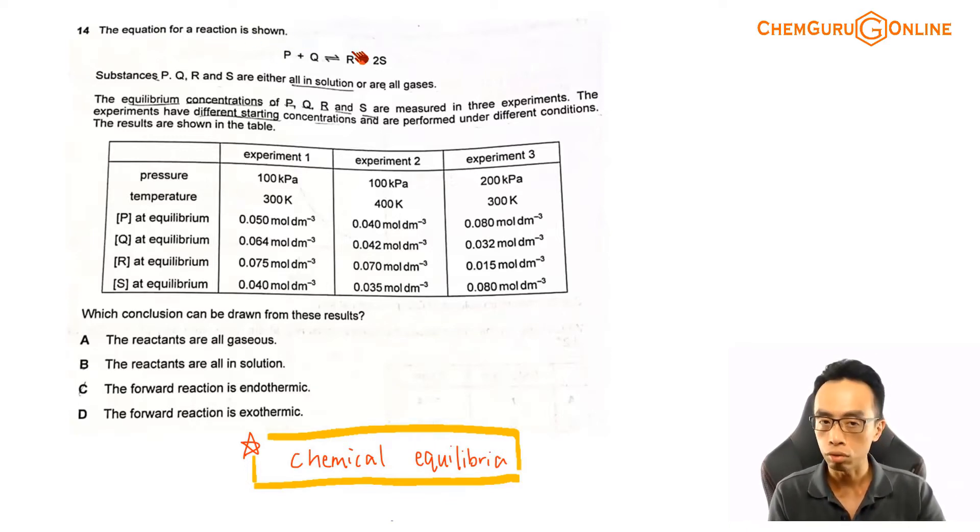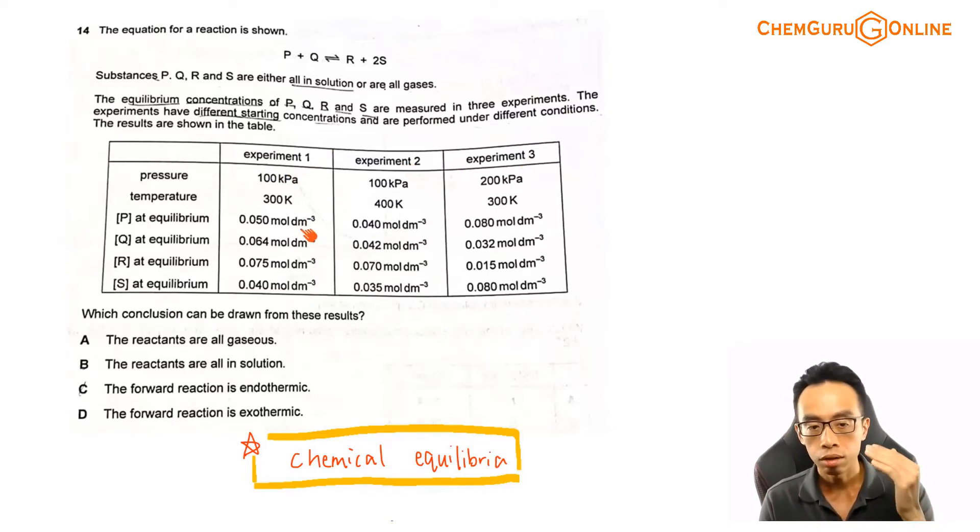Question 14 goes something like this. The equation of a reaction is shown. We have P plus Q to give me R and 2S. This is a reversible reaction. Substances P, Q, R, S are either all in solution or are all gases. The equilibrium concentrations of P, Q, R and S are measured in three experiments. The experiments have different starting concentrations and are performed under different conditions. The results are shown in the table. We have this information here involving different pressure, different temperature, and different concentrations of P, Q, R, S at equilibrium.